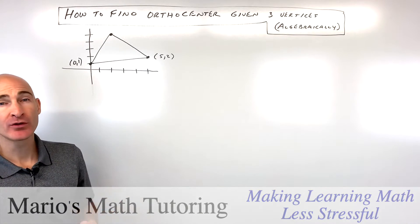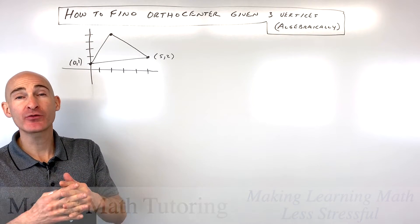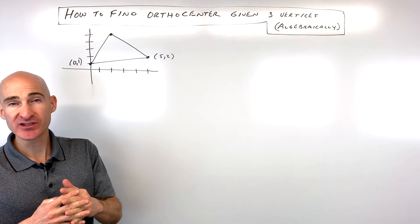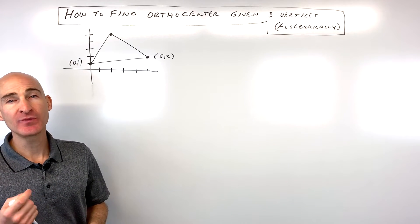We're going to work with this triangle to find the orthocenter, which is where the three altitudes intersect. That coordinate is going to be our orthocenter.